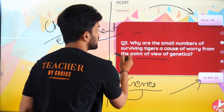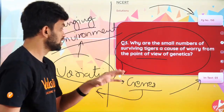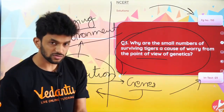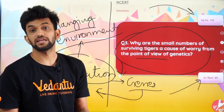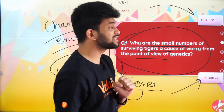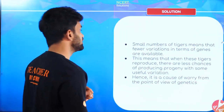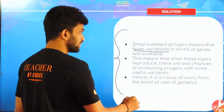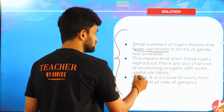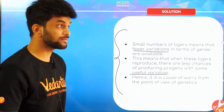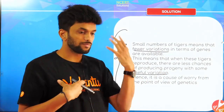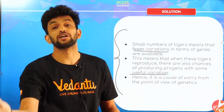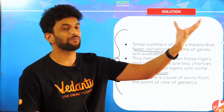So why are small numbers of surviving tigers a cause of concern? Because when they die, you remove their genes. When genes are removed, there are fewer chances of variation, and if there are fewer variations, they cannot adapt to the changing environment. There are fewer chances of useful variation — it becomes very difficult for the species to sustain.